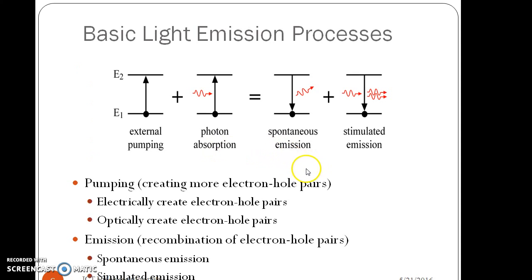The basic light emission process which takes place in any optical source has two parts. One is external pumping or external excitation and the second one is absorption. The third one is the emission of light. The emission of light has two parts or two types: spontaneous emission and stimulated emission.